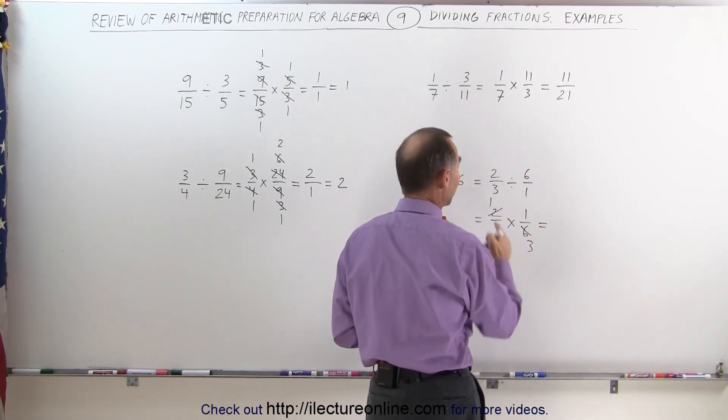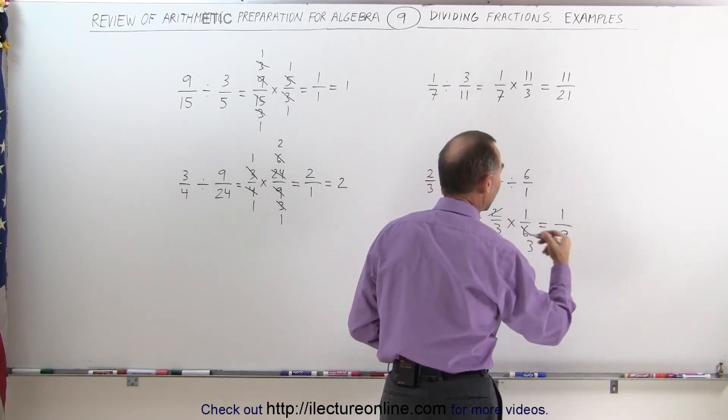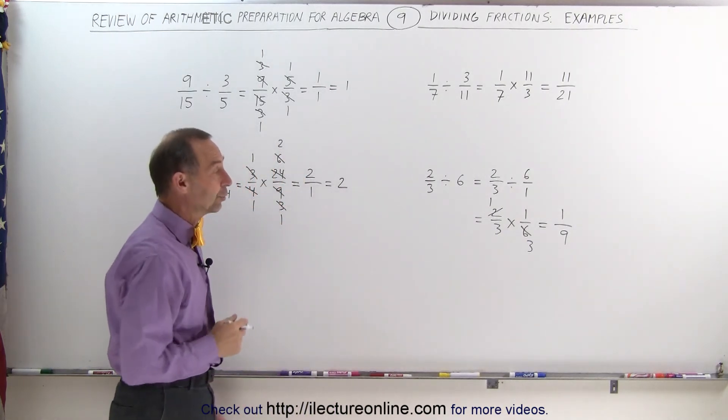Now you work out the multiplication, 1 times 1 is equal to 1, and 3 times 3 is equal to 9, the answer is 1/9. 2/3 divided by 6, therefore, is equal to 1/9.